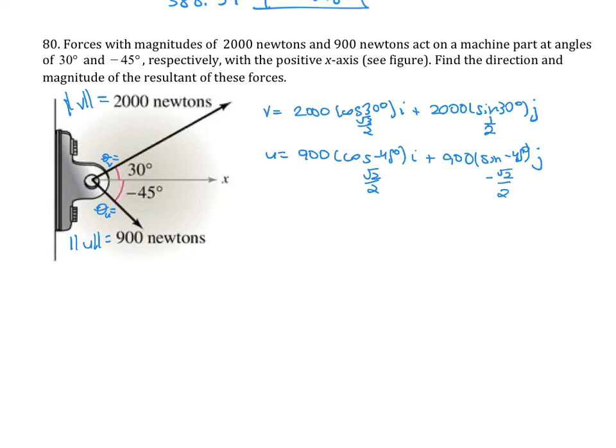And so you can simplify. So we know v is going to be 1000 root 3 i plus 1000 j. And u will be 450 root 2 i minus 450 root 2 j. And then add the vectors together.